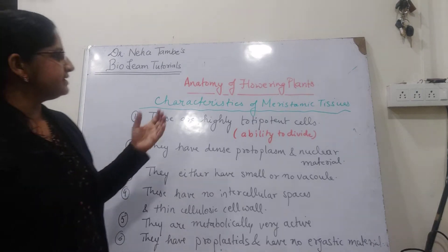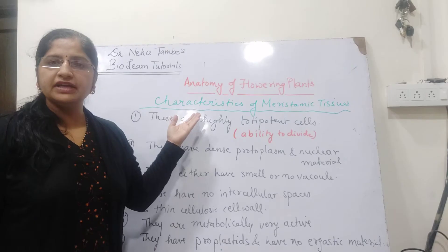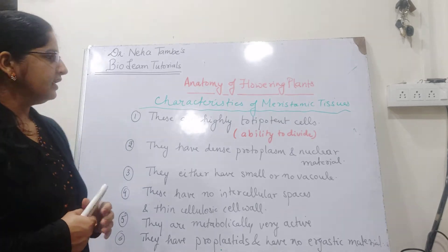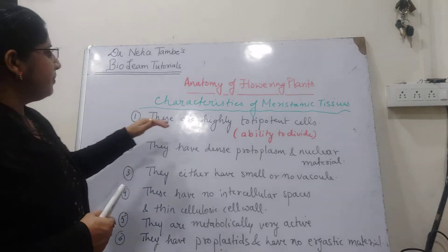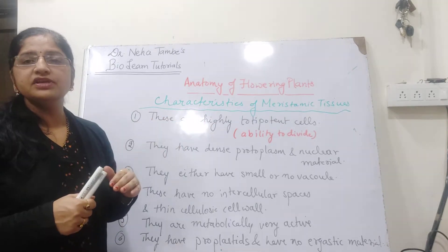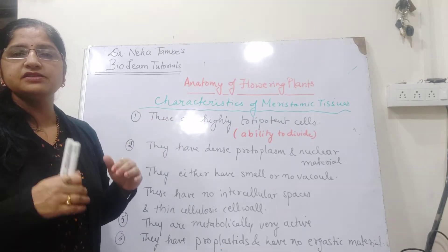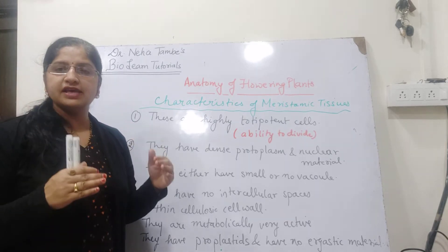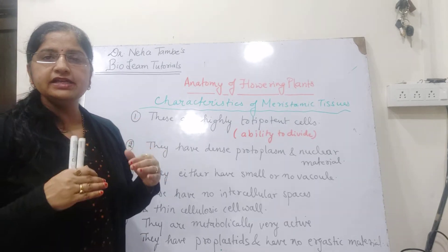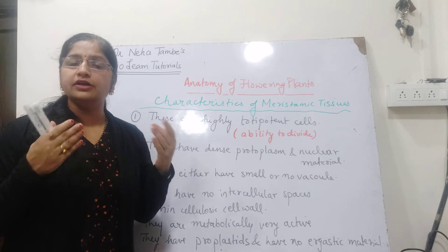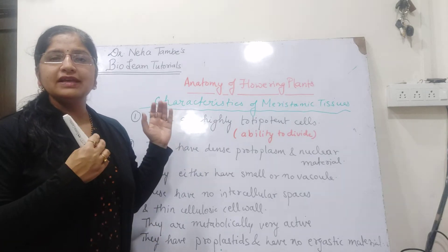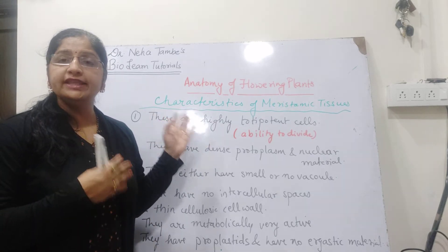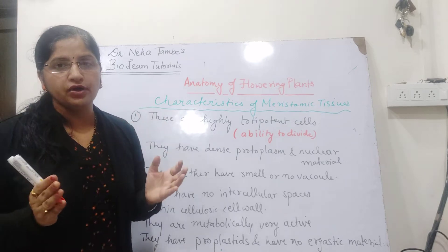Now let us discuss some of the characteristics of meristematic tissue. Meristematic cells are highly totipotent cells. They have the ability to divide continuously because the complete duty is on these cells to make a new plant body.